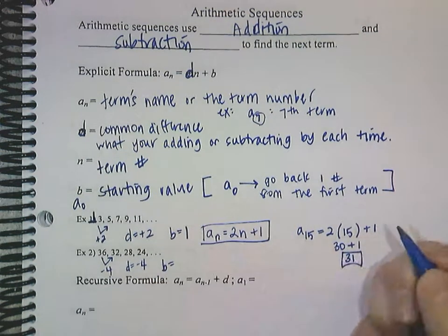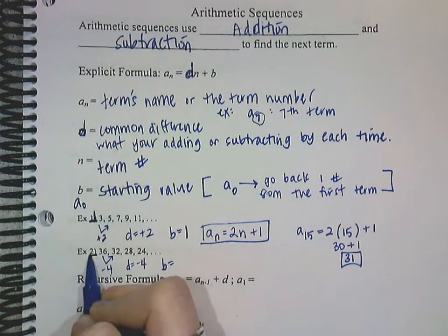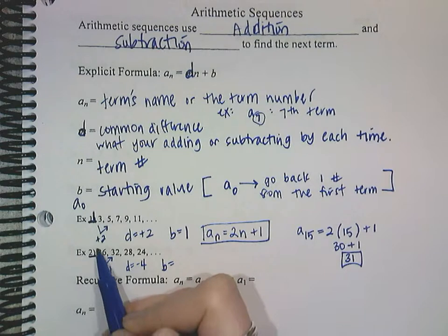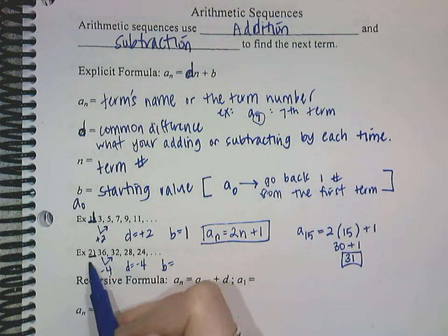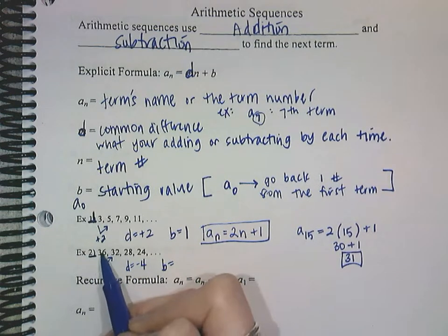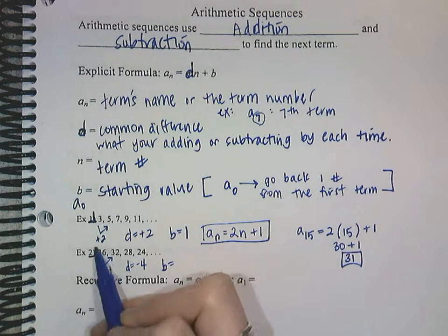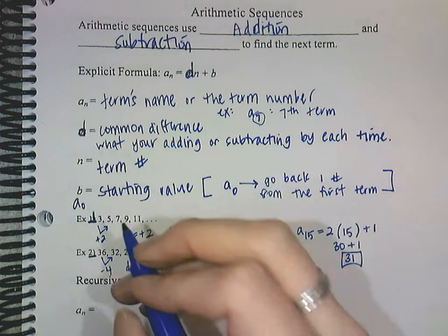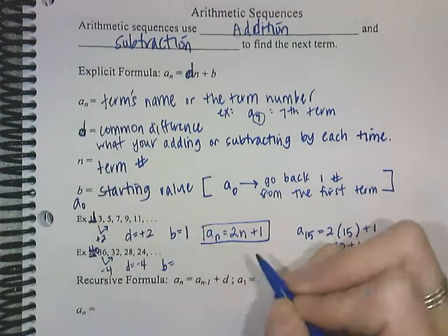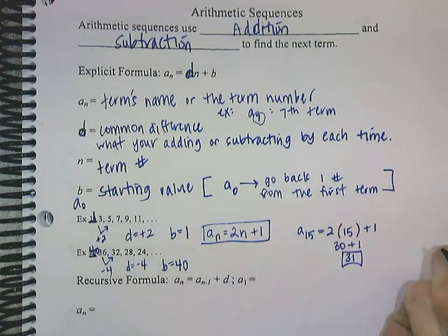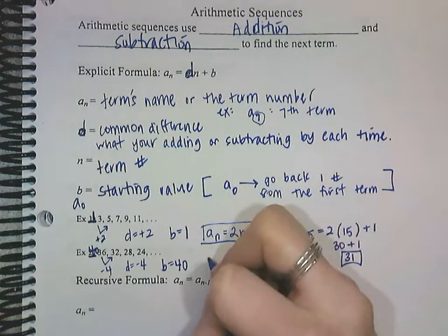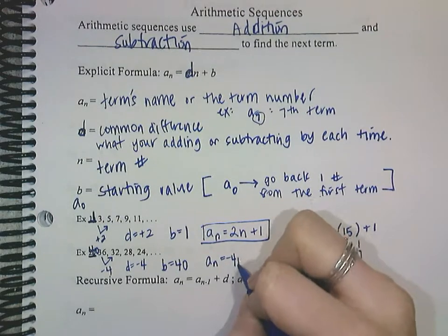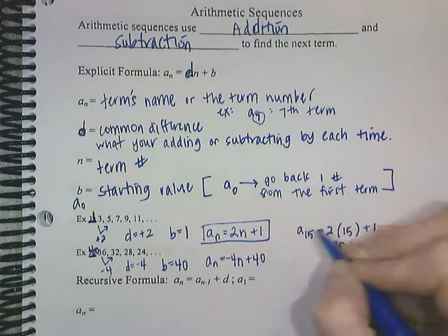Now I need to figure out my b value. So my b value is the number that would be before 36 in the sequence. So this number has to be bigger than 36, because I'm subtracting every time. And when I take this number and subtract it by 4, I want to get 36. So I'm going to do the opposite. When you go the opposite direction, I'm going to add 4 to 36. And then when I do that, I get 40. So my beginning number is 40. Then I need to write my formula. So a sub n equals my d, which is negative 4 times n, and then plus 40 at the end.